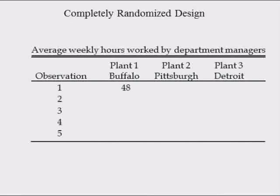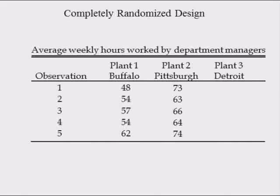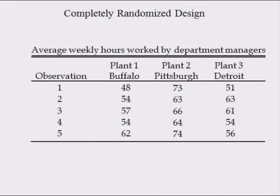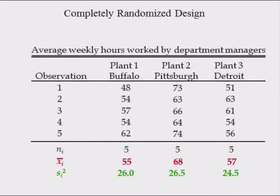The number of hours worked by the five managers from the Buffalo plant are 48, 54, 57, 54, and 62 hours per week. The five managers from the Pittsburgh plant worked 73, 63, 66, 64, and 74 hours per week. The five managers from the Detroit plant worked 51, 63, 61, 54, and 56 hours per week. The sample sizes are N1=5, N2=5, N3=5. The sample means are X̄1=55, X̄2=68, X̄3=57. The sample variances are S1²=26, S2²=26.5, S3²=24.5 hours squared.